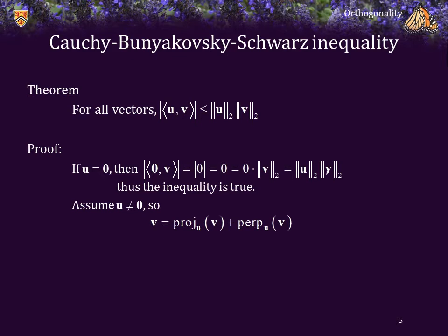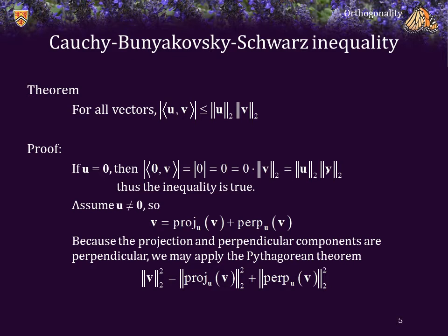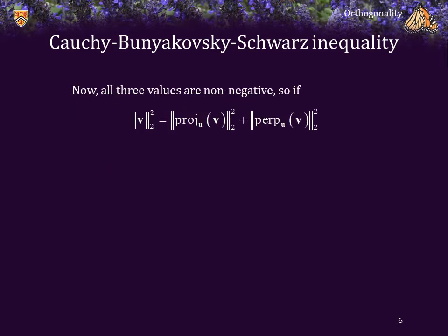Let us assume that u is not the zero vector. In this case, v can be written as the projection of v onto u plus the perpendicular component of that projection onto u. The projection and the perpendicular components are perpendicular, and therefore we may apply the Pythagorean theorem. If all three entries in an equation are non-negative where a equals b plus c, then a must be greater than or equal to either b or c alone. As all three of these are non-negative, the two-norm of v squared must be greater than or equal to the two-norm of the projection squared.